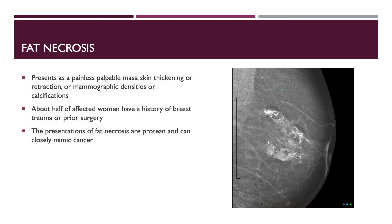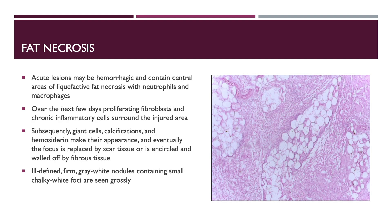Fat necrosis presents as a painful palpable mass, skin thickening or retraction, or mammographic densities or calcifications, as can be seen in the mammogram to the right. About half of affected women have a history of breast trauma or prior surgery. The presentations of fat necrosis are protean and can closely mimic cancer. Acute lesions may be hemorrhagic and contain central areas of liquefactive fat necrosis with neutrophils and macrophages. Over the next few days, proliferating fibroblasts and chronic inflammatory cells surround the injured area. Subsequently, giant cells, calcifications, and hemosiderin make their appearance, and eventually the focus is replaced by scar tissue or encircled and walled off by fibrous tissue.